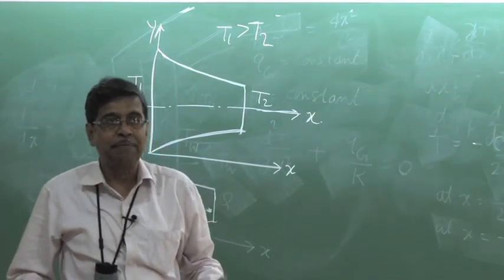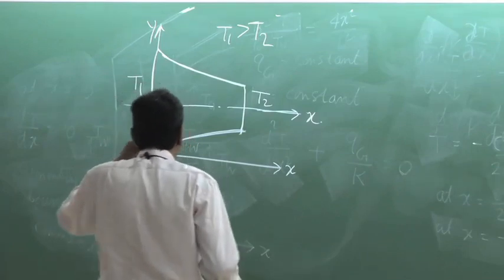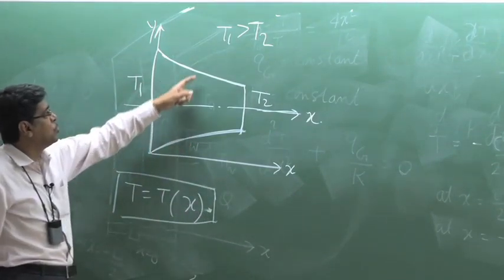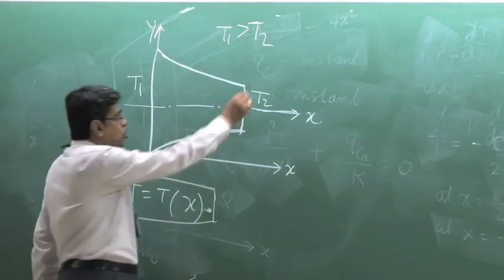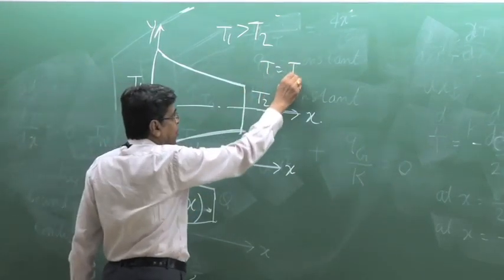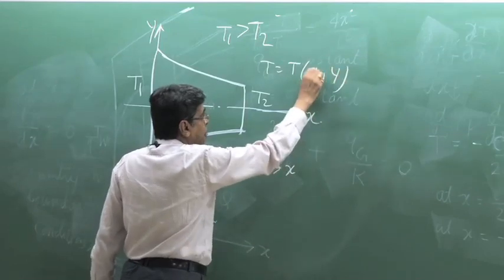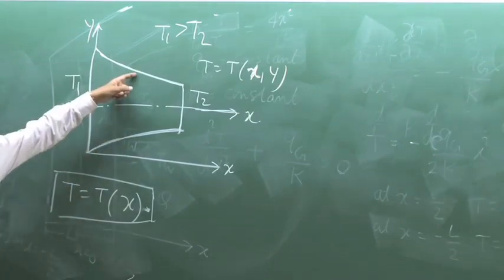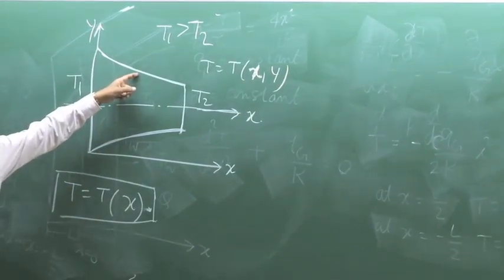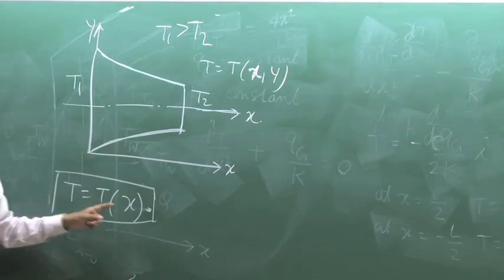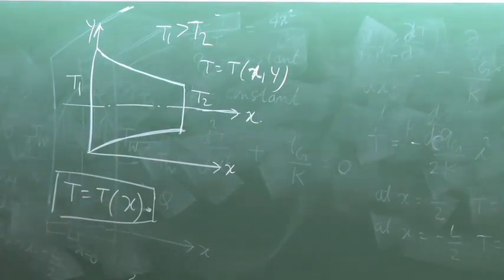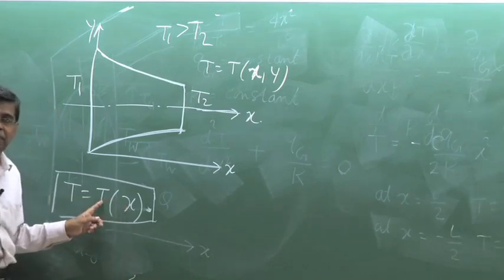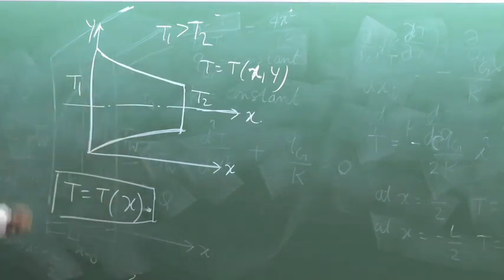Alternatively, we can acknowledge that this is truly a two-dimensional heat conduction problem where T is a function of both x and y — perhaps a weak function of y. In that case, we consider an area-average temperature, which is a function of x. In both cases, whether it is an area-average temperature or a temperature assuming no cross-sectional variation, T is treated as a function of x only.